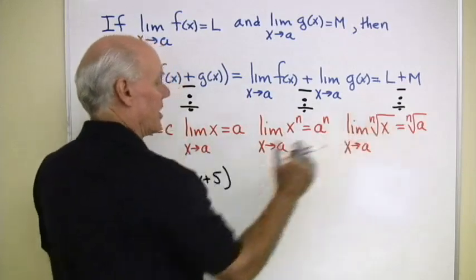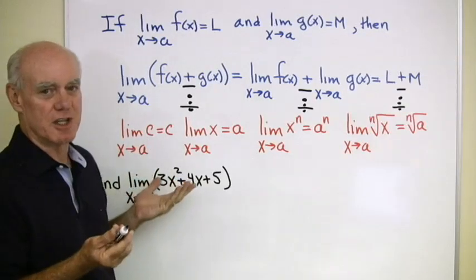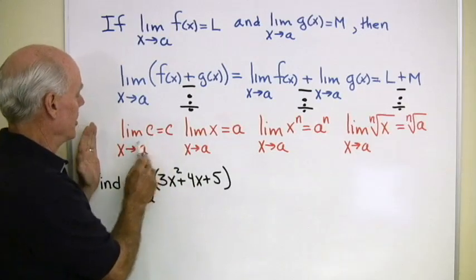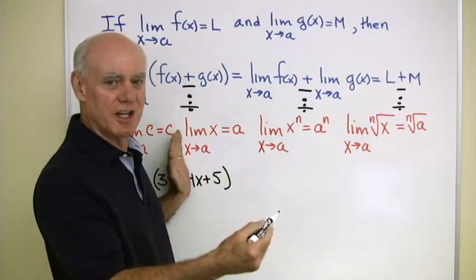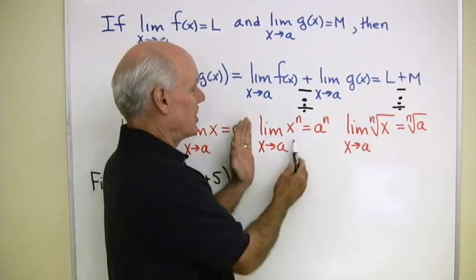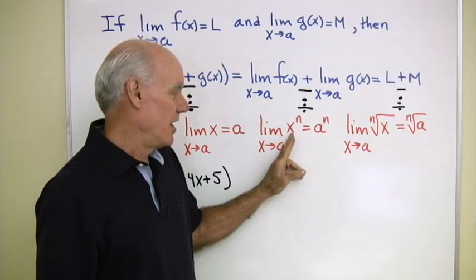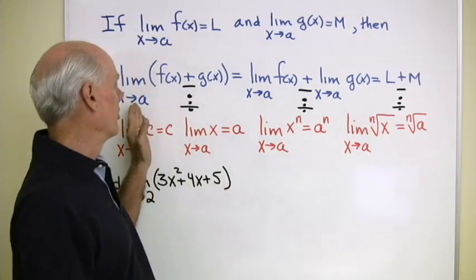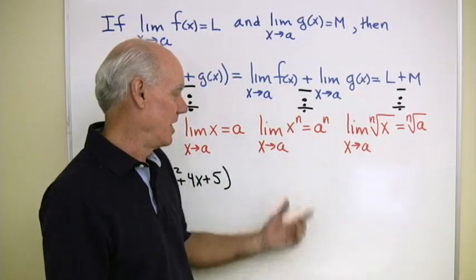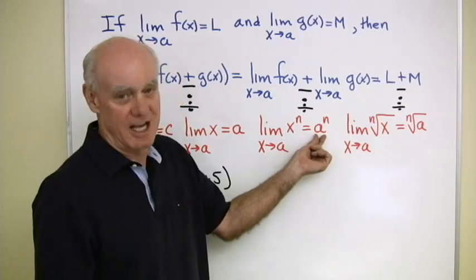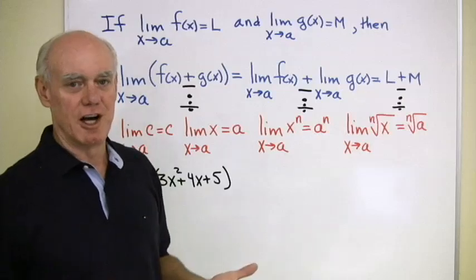Here are some other results that can also be proved using the definition of the limit. The limit as x goes to a of a constant c is just c — as x goes to a, c doesn't go anywhere, it stays where it is. The limit as x goes to a of x is a. And as x goes to a, x to the nth goes to a to the nth, because the exponent n represents repeated multiplication, and the limit of a product is the product of the limits. The same thing holds for the nth root.